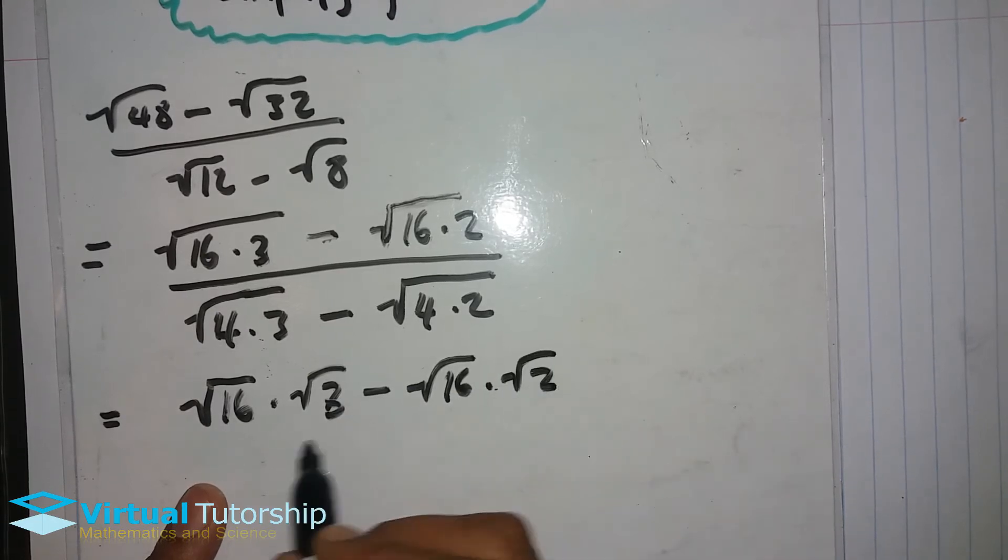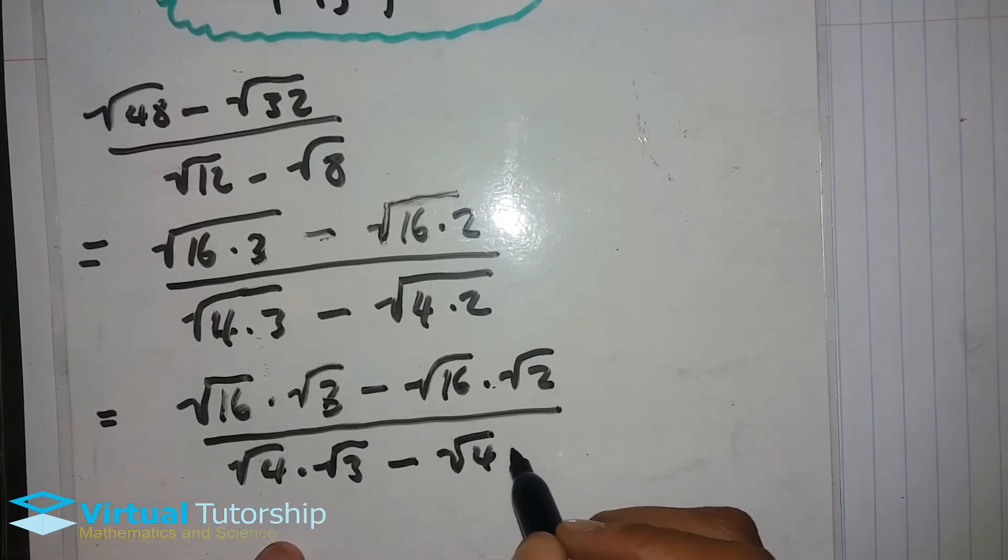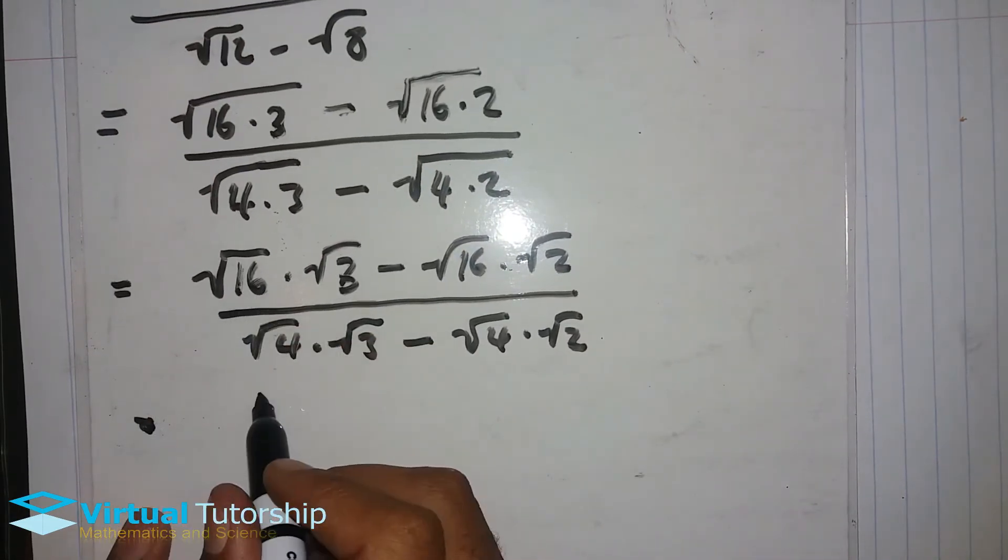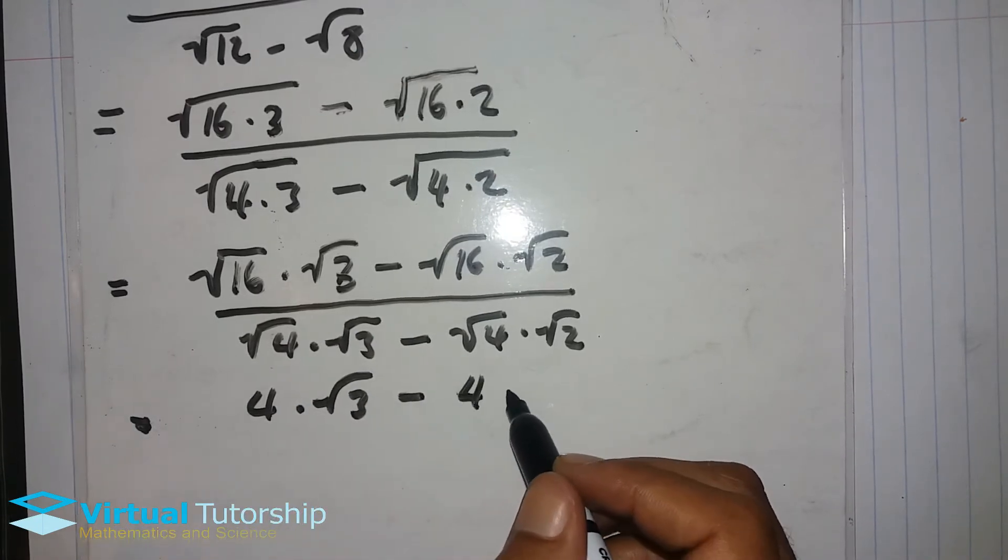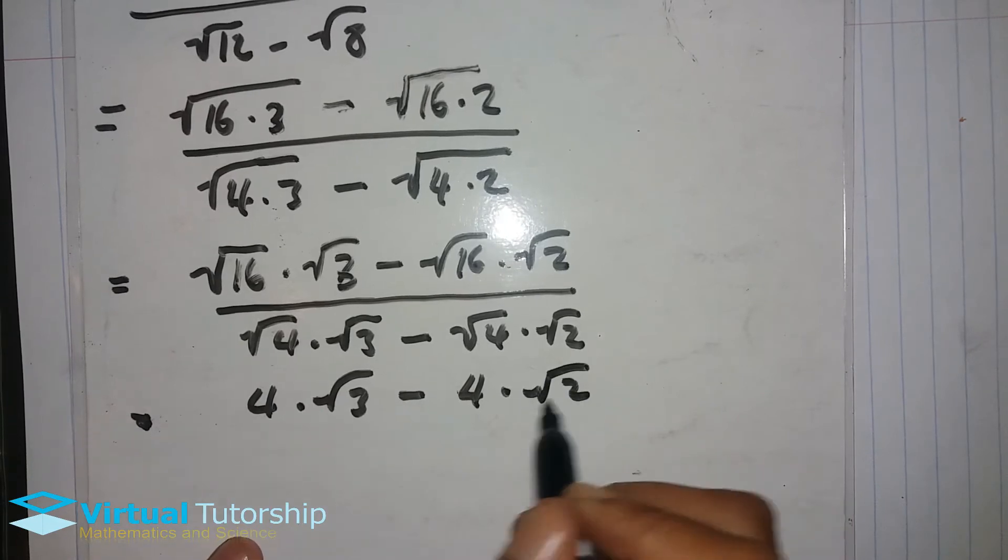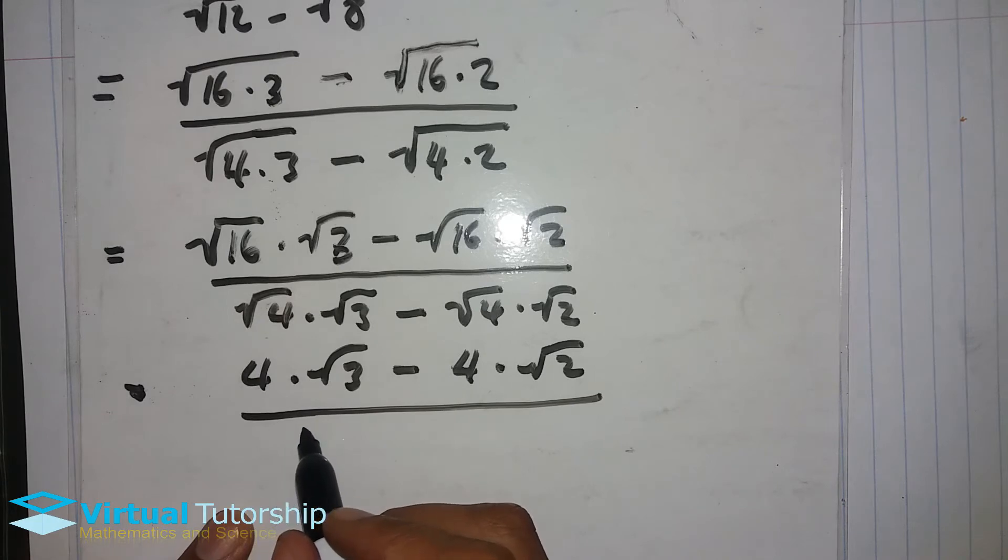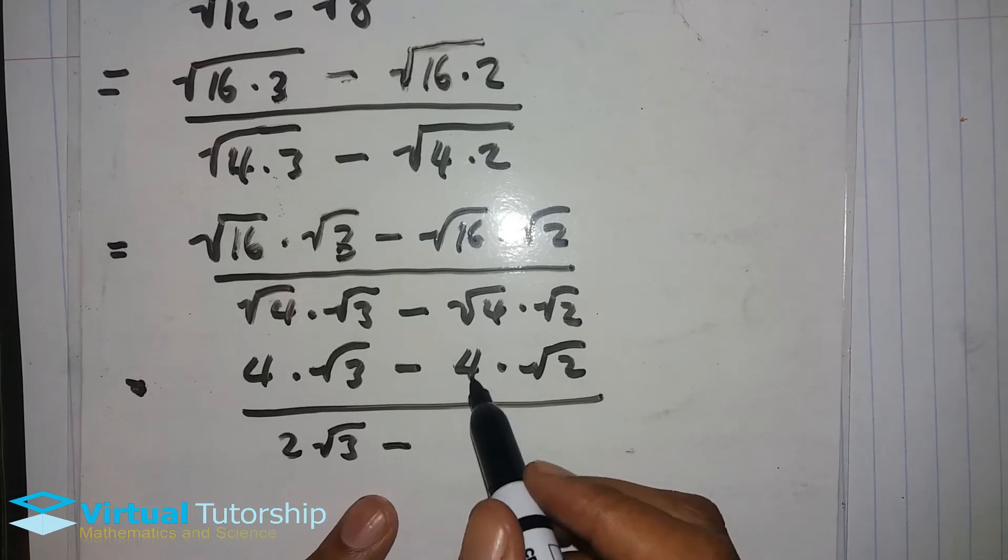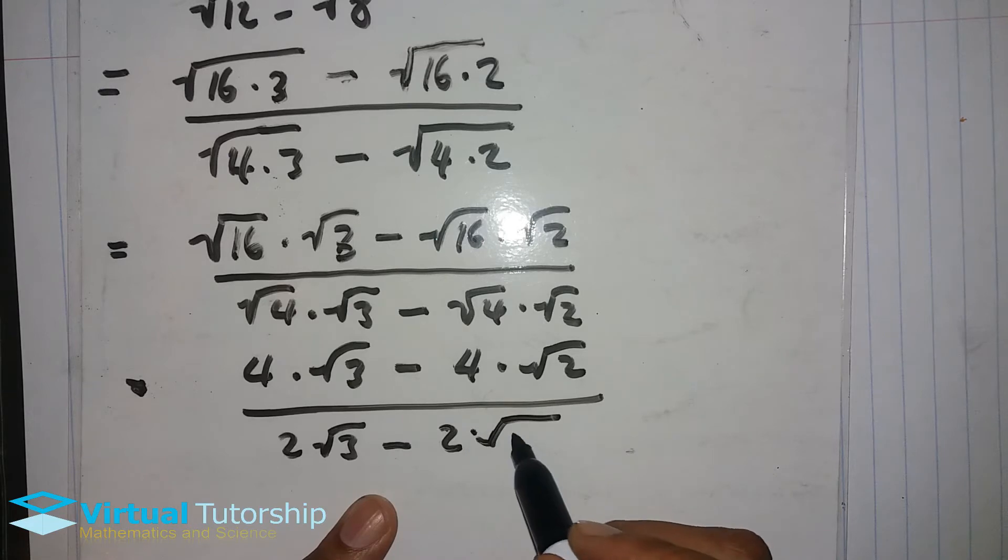It's going to be square root of 16 times square root of 3 minus square root of 16 times square root of 2. That's equal to 4 times square root of 3 minus 4 times square root of 2 over square root of 4 times square root of 3 minus square root of 4 times square root of 2.